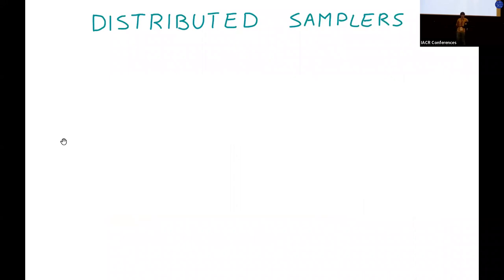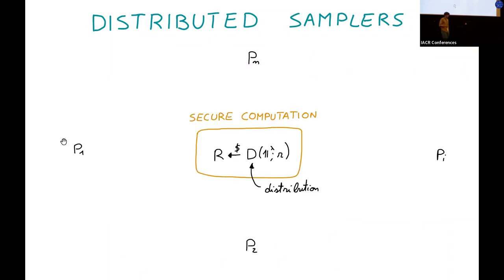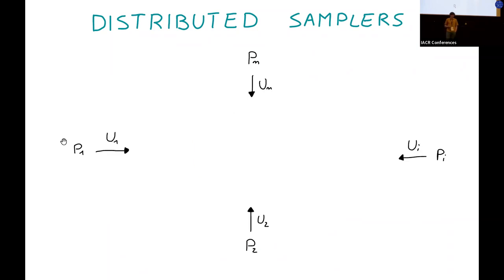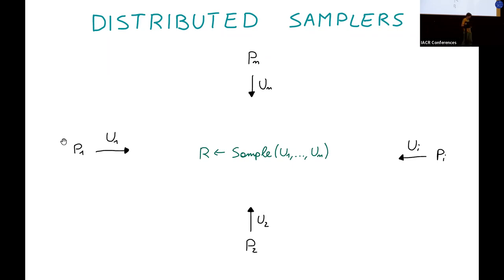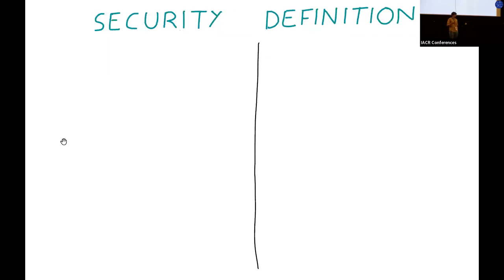I will start by talking about distributed samplers. We are in the n-party setting and we allow up to n-1 corruptions. Our goal is to generate a sample R from the distribution D in a secure way. We model the distribution as a polynomial time algorithm that takes as input the security parameter and random coins. We want to design constructions that use only one round of communication, so each party P_i will send a single message U_i simultaneously to all the other parties. After that, everybody is able to recompute the output by applying a deterministic function on the transcript. The output is public, so even an adversary that just listens to the communications is able to retrieve it.